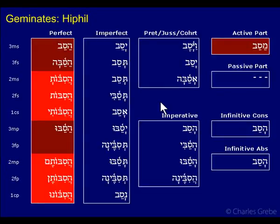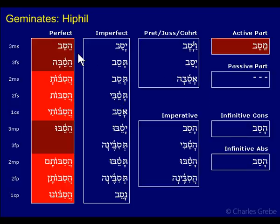Here we have the paradigm for Savav. The first thing is that this divides into two groups. The red ones here are the ones that have tsere as the prefix vowel, and the rest of them have qamets — except for one down here where qamets is reduced, but it's all coming from qamets anyway. We have tsere here just like we do for the prefix vowel for the hollow verbs, so comparing the hollow verbs you'll see that the prefix vowels line up.